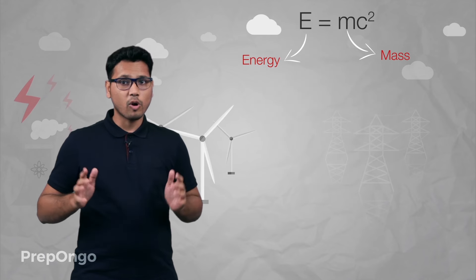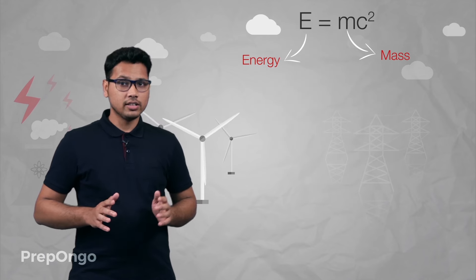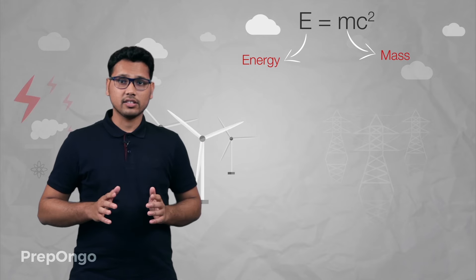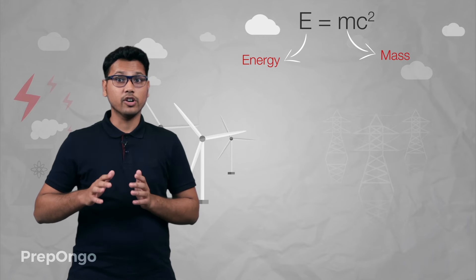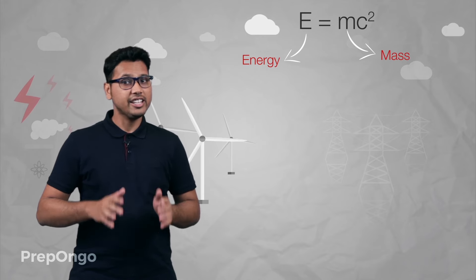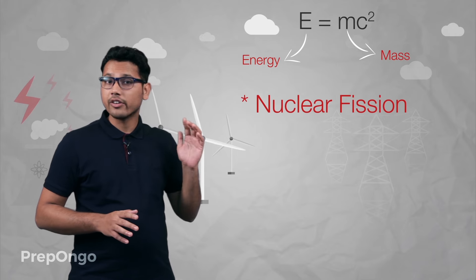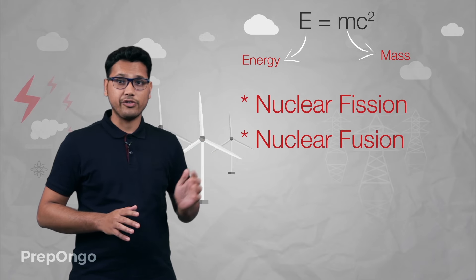Now there are two processes in which such a conversion occurs. That means mass is getting converted into energy. These two processes are nuclear fission and nuclear fusion.